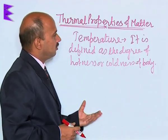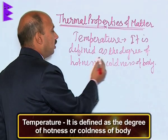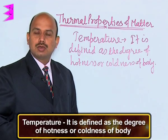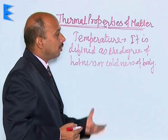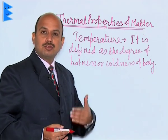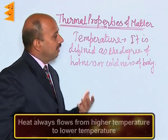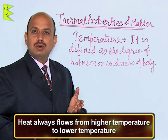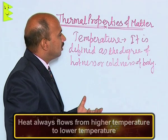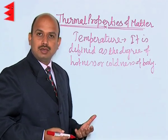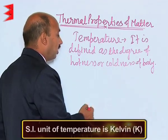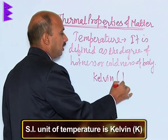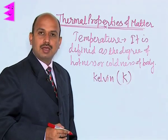The next quantity is temperature, which is defined as the degree of hotness or coldness of a body. The temperature of a body decides the direction of flow of heat — heat always flows from a higher temperature body to a lower temperature body. Temperature is considered a basic quantity and its SI unit is Kelvin, represented by capital K.